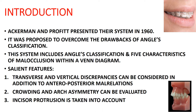The most commonly used classification of malocclusion is Angle's classification, but it has various drawbacks. One major drawback is that Angle's classification considers only the relationship in the antero-posterior or sagittal plane, and does not consider the other two planes — transverse and vertical. Ackerman and Proffit's classification considers malocclusion in all three planes: transverse, vertical, and sagittal.